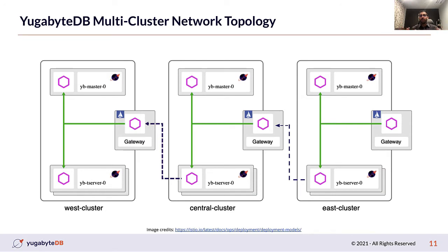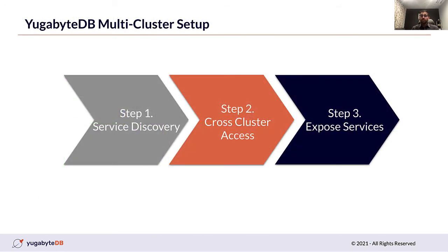This shows a simplified view of what you'd expect with a three-region setup of YugabyteDB. The TServer and masters are reachable from within the cluster and outside the cluster. The central TServer is connecting to its own master and also to the west and east clusters. The steps to achieve this deployment are: first, set up service discovery; second, allow cross-cluster access; and finally, expose services to other regions and clusters. For the first two steps, I'm going to use the Istio service mesh, and then for exposing services, I'll need to make a few changes on the database side.